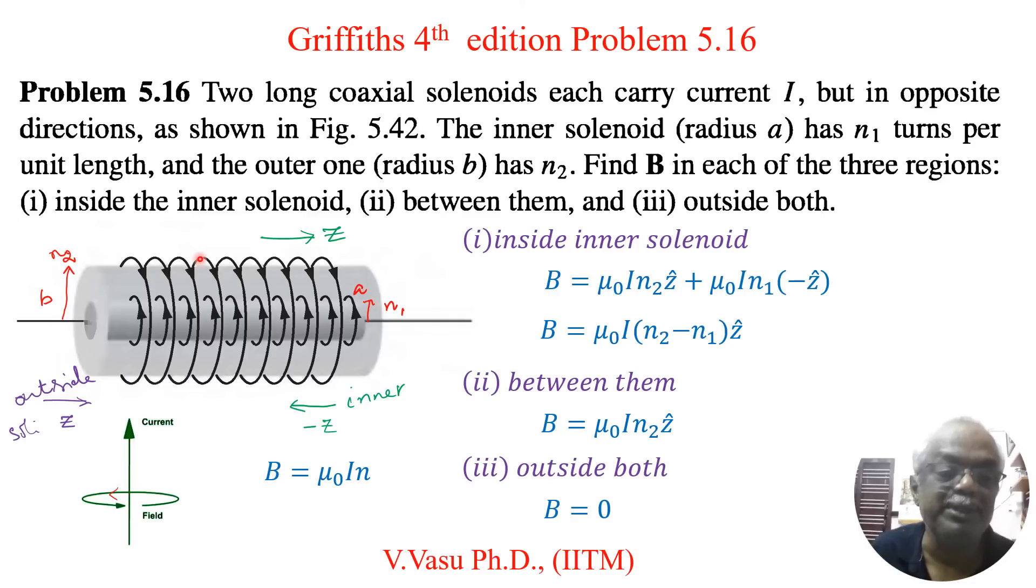Along this Amperian loop the current enclosed is zero. So naturally the magnetic field will be zero.